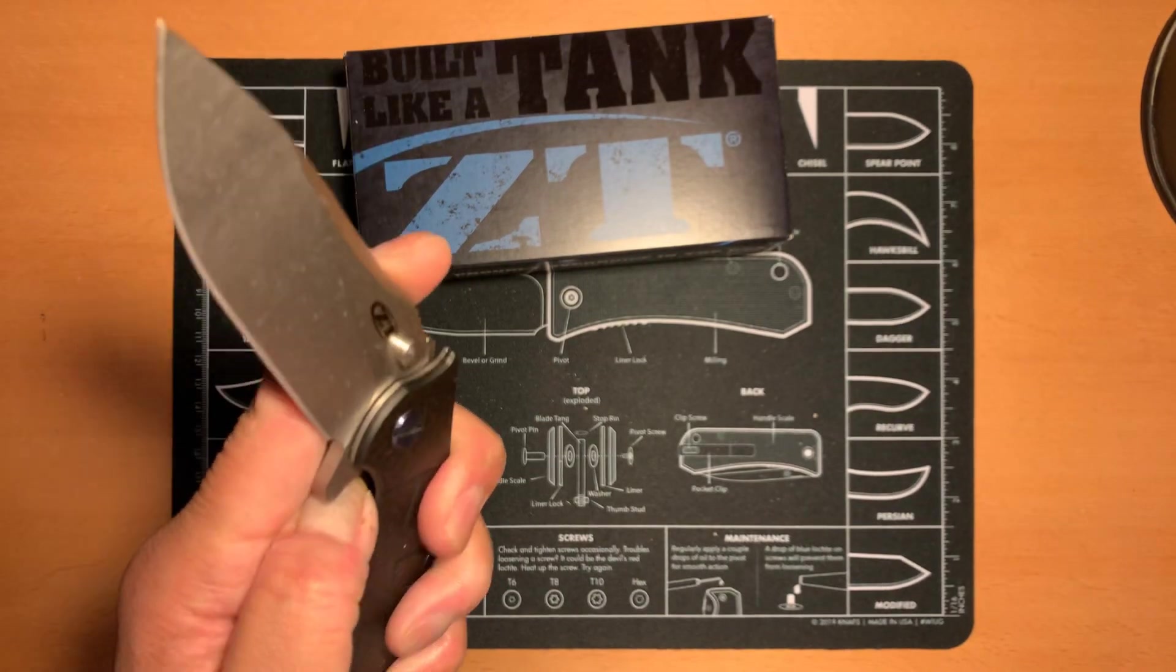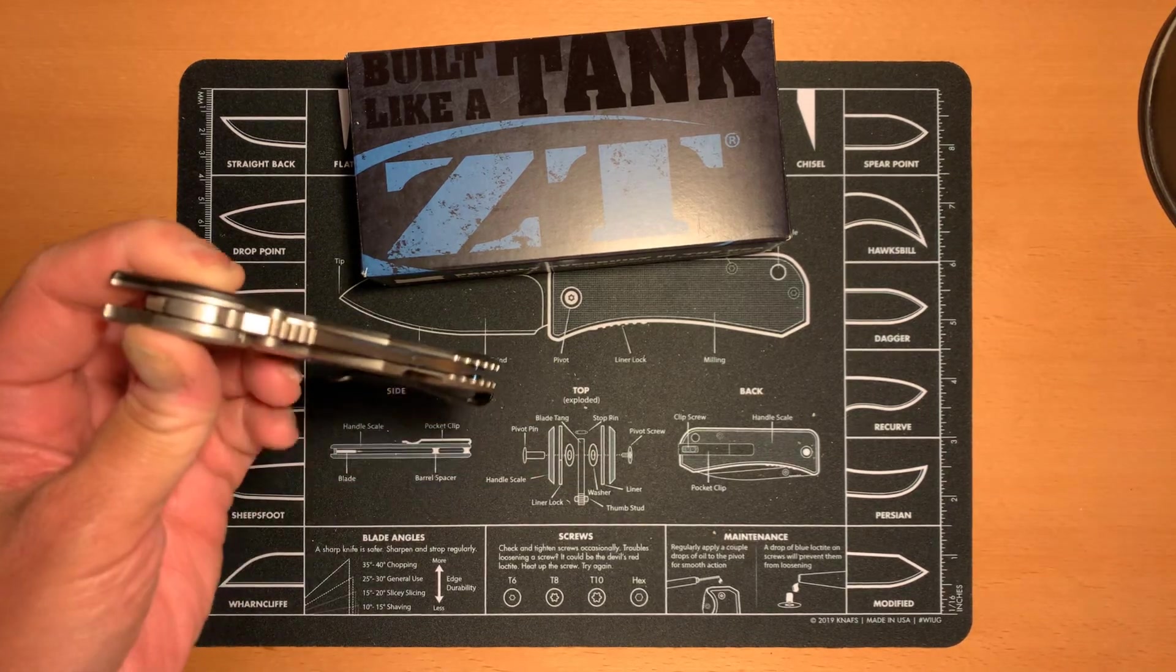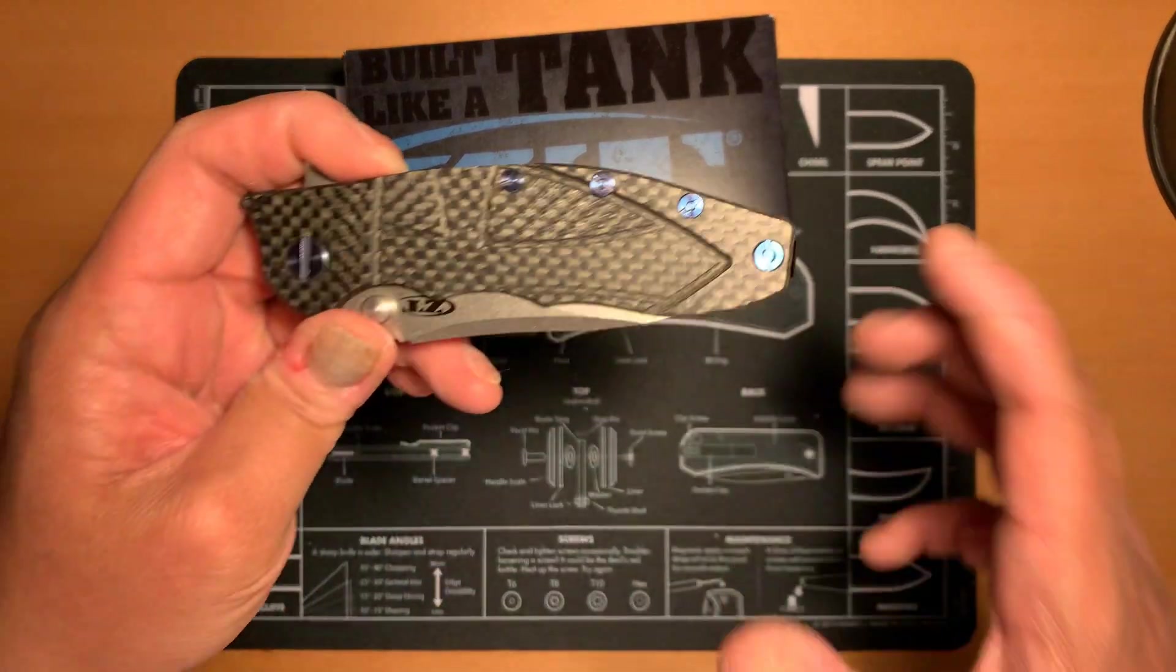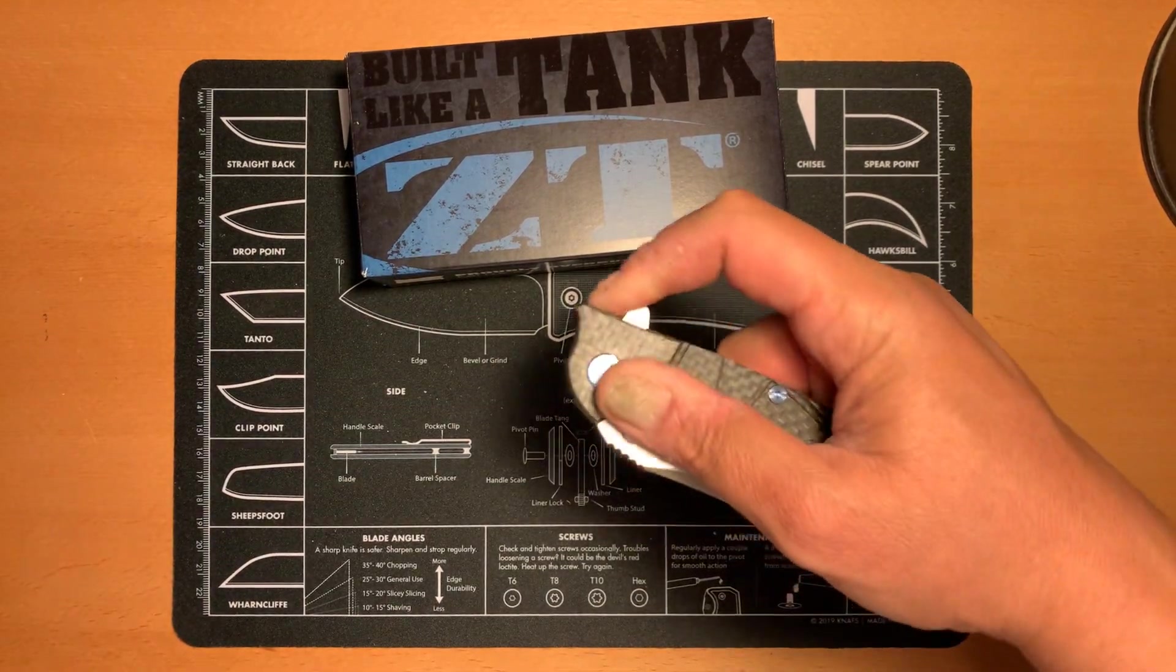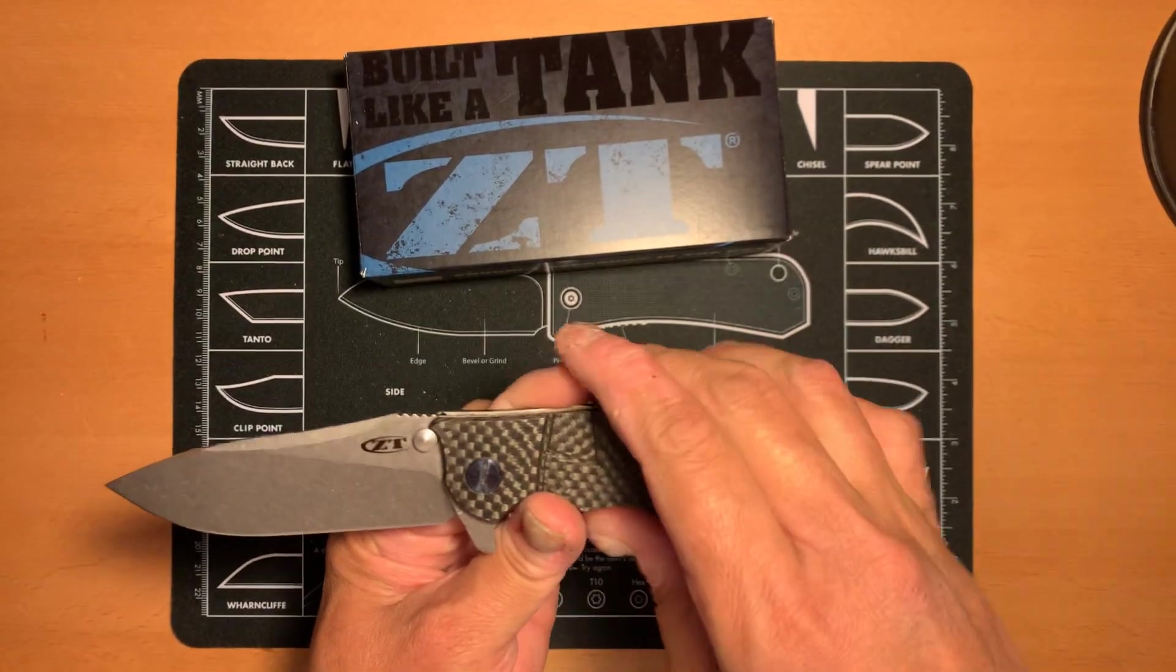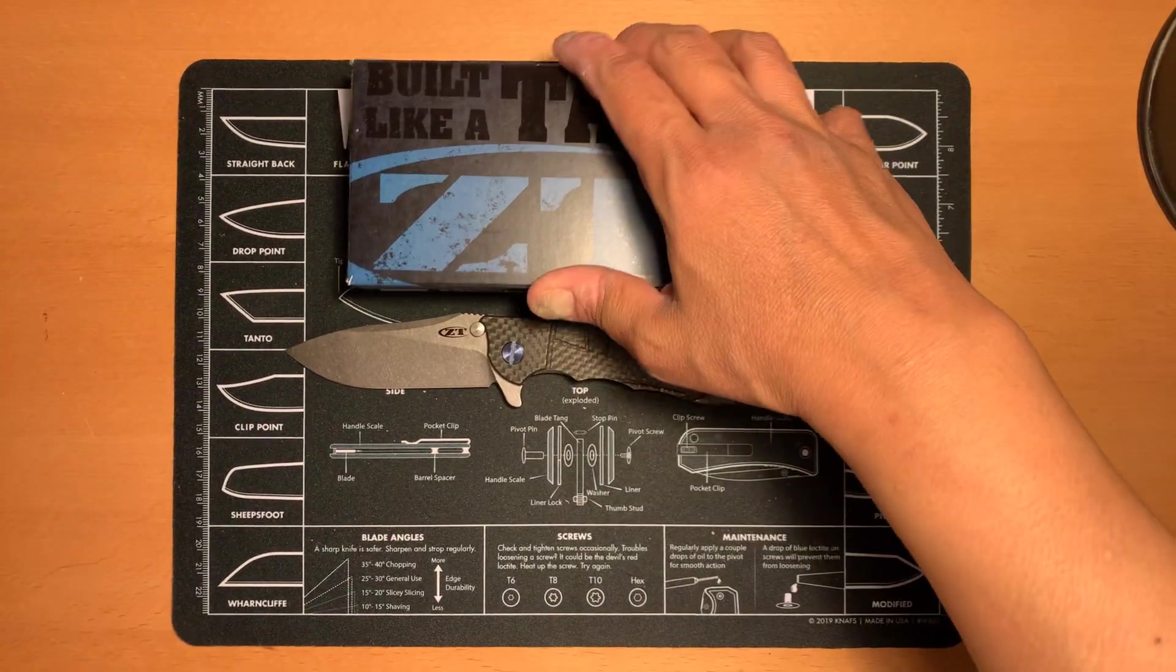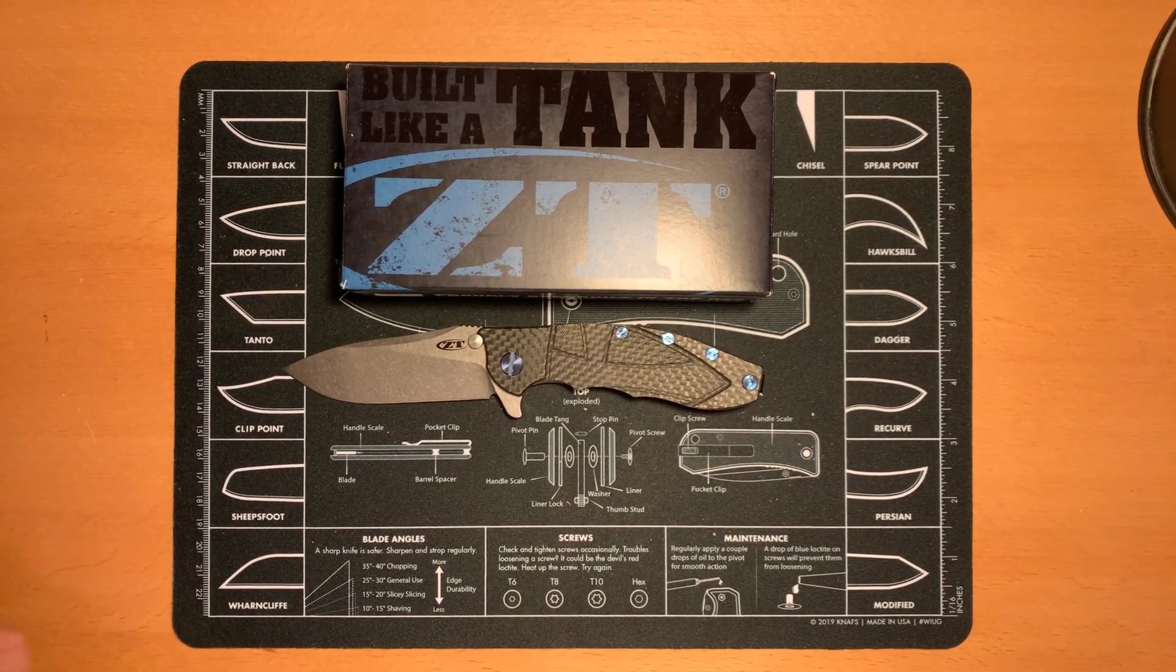So, this is the Zero Tolerance 0562. Now, this knife is no stranger to the knife community. And that's exactly my point regarding this knife. It's a lot more iconic than some of the other knives out there. Now, when you get into knife collecting, you're going to find that there are a lot of iconic knives out there that actually represent a company.